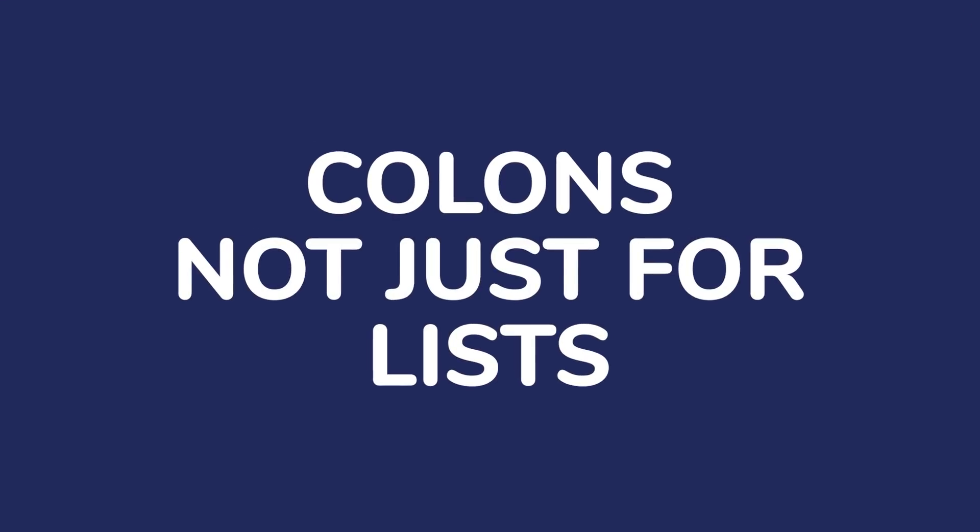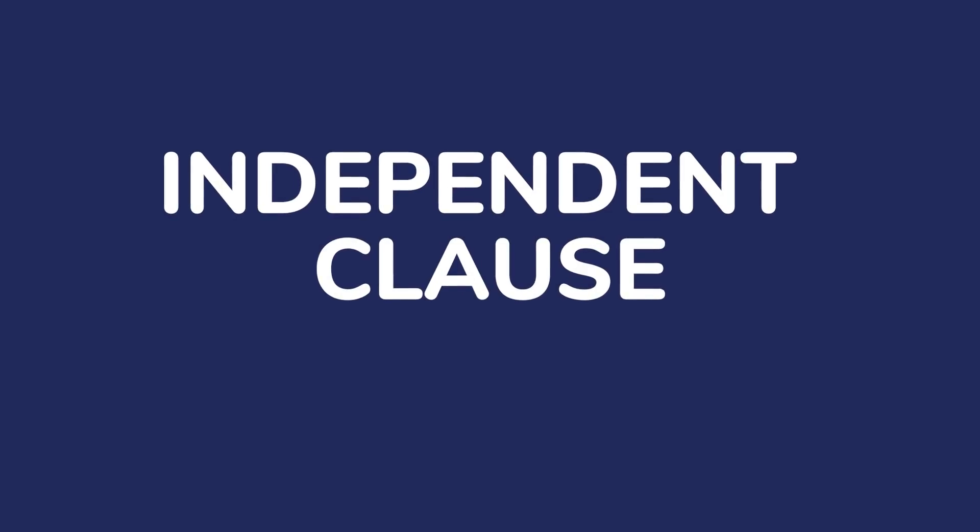For our last ACT English tip, number three, we have the idea of colons. Teachers love to say that colons are what we use before lists, but that is not the case. The ACT knows that's not the case, but they know teachers are going to say that all the time. So if you see a list, don't automatically use a colon before it. A colon needs to have an independent clause before it as well. If colons are confusing, watch our colons video — I can spend about 10 minutes explaining it so you'll know exactly how it works.